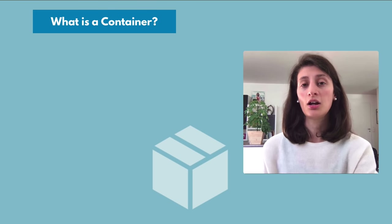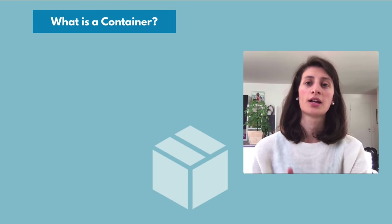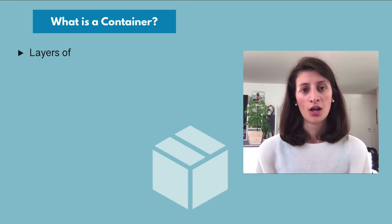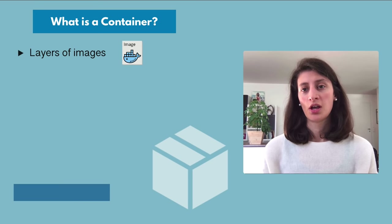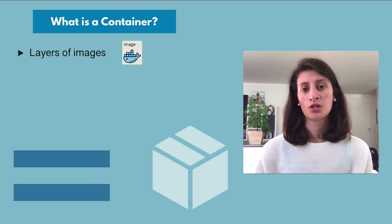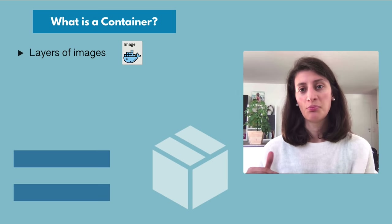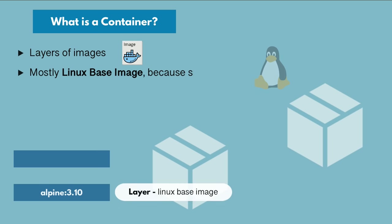Now let's look at what a container is technically. A container is made up of images — layers of stacked images on top of each other. At the base of most containers you would have a Linux base image, which is either Alpine with a specific version or some other Linux distribution. It's important for those base images to be small — that's why most use Alpine — to keep the container small in size, which is one of the advantages of using containers.